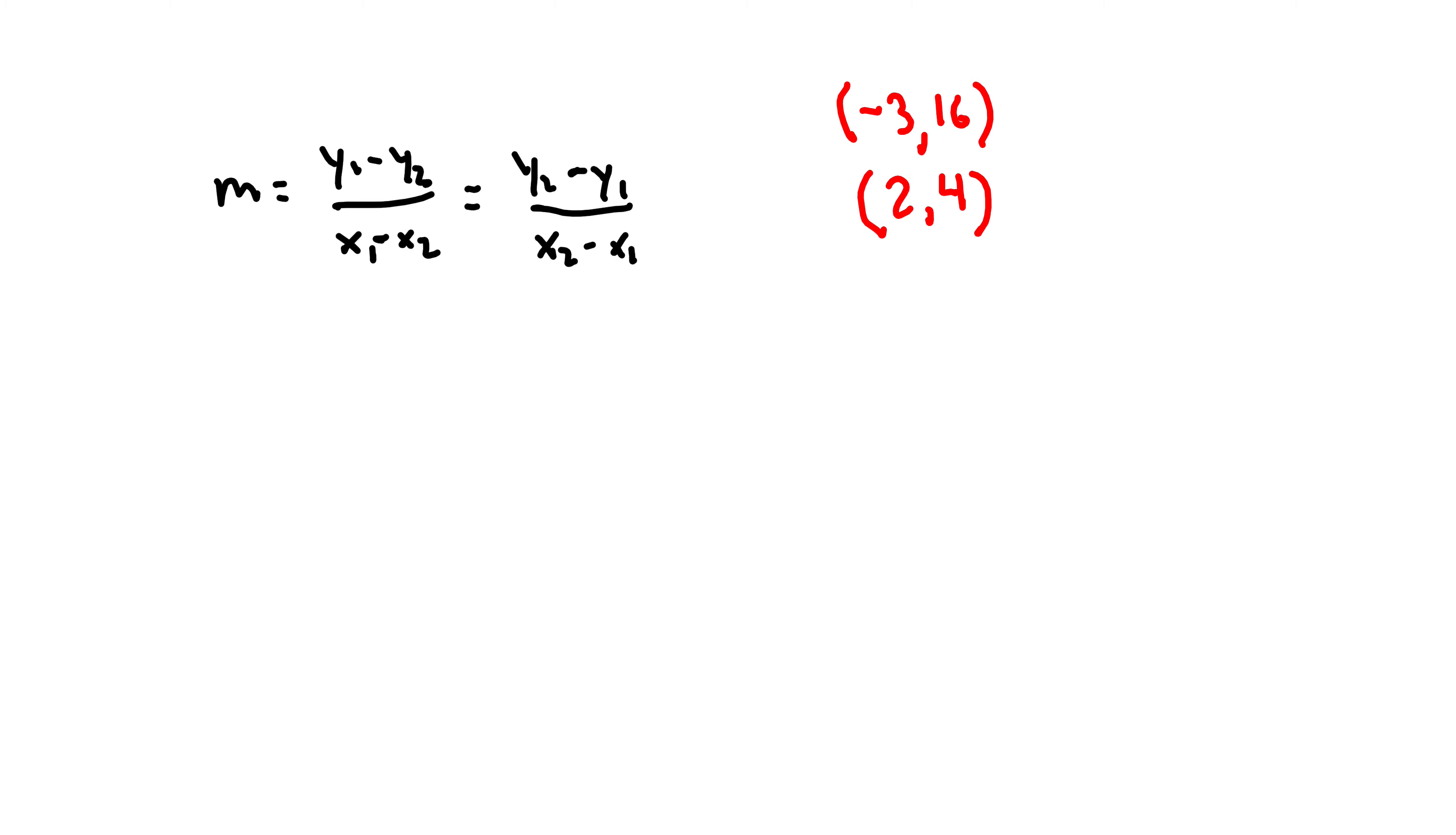That means that if you want to find the rise, you find the difference. So you can think of it as subtracting. Lining these up is helpful because this way you don't mess up the order ever. So 16 minus 4 is 12, and -3 minus 2 is -5.